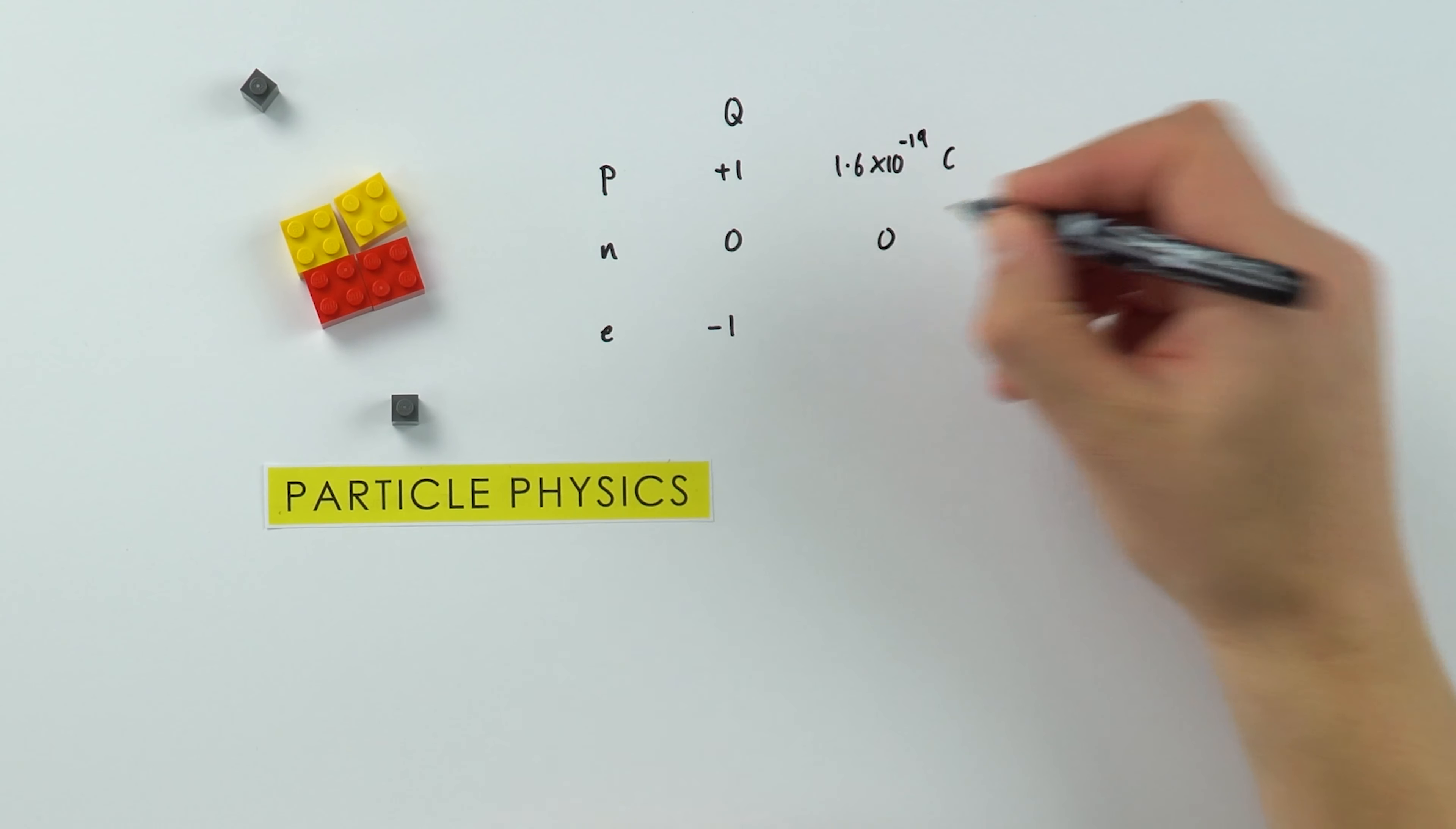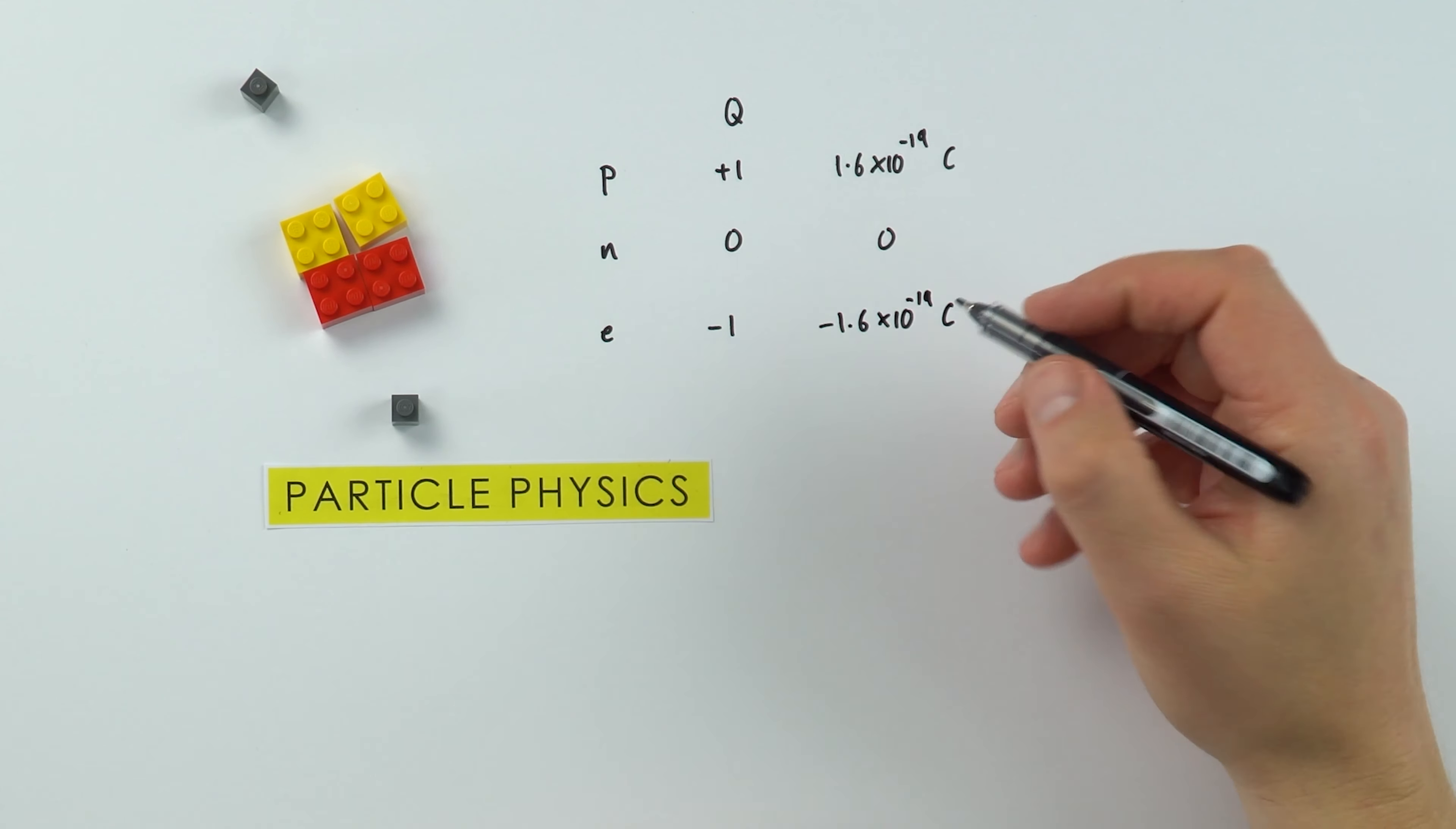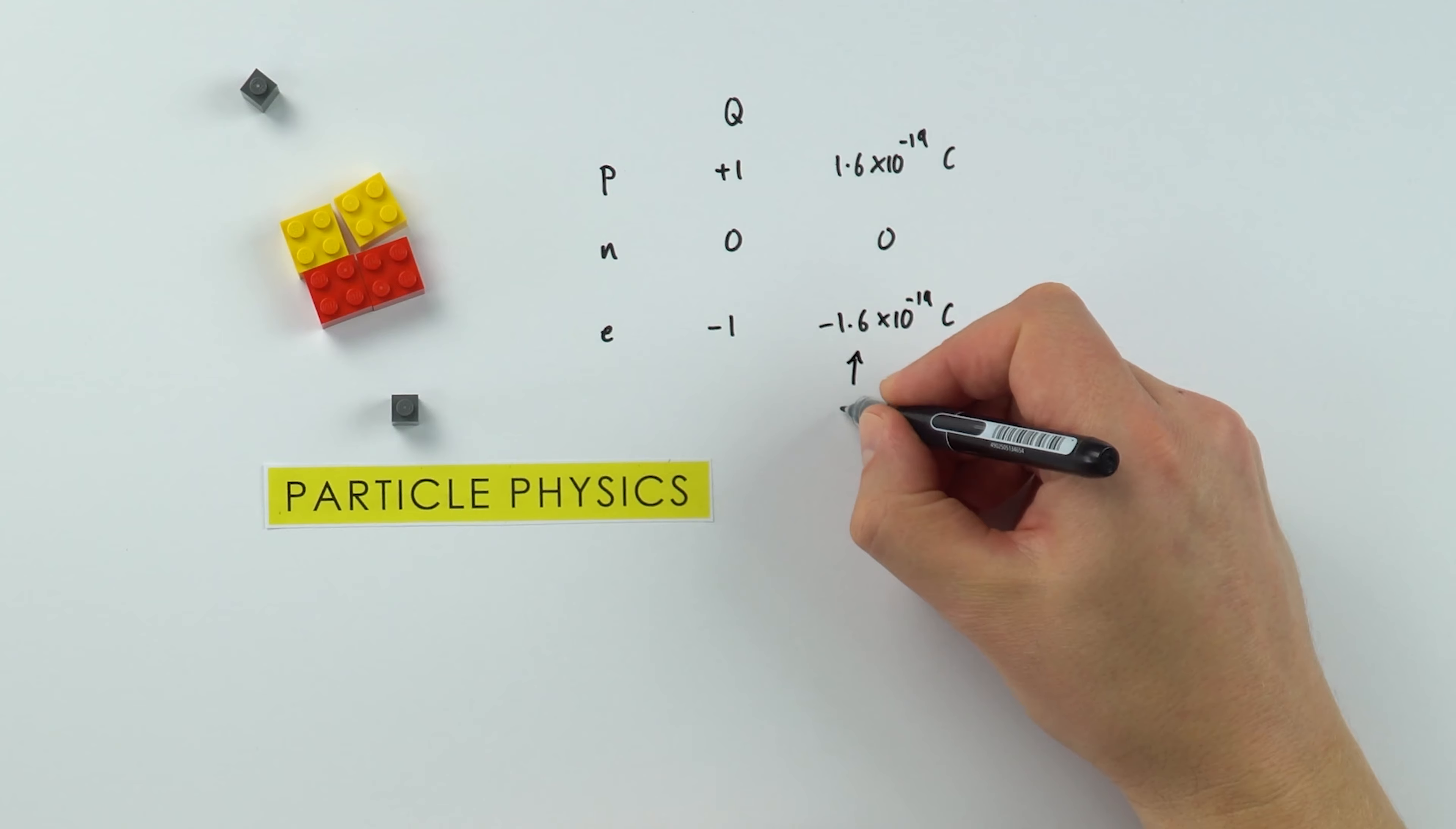Basically a proton has a charge of plus 1.6 times 10 to the minus 19 coulombs. Neutron is zero, and the electron is minus 1.6 times 10 to the minus 19 coulombs. And what we say is that this value here is the elementary charge. This is the smallest unit of charge that charged particles come in.